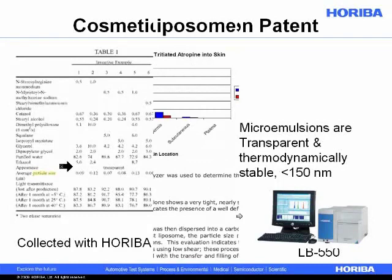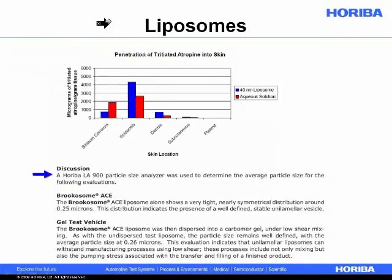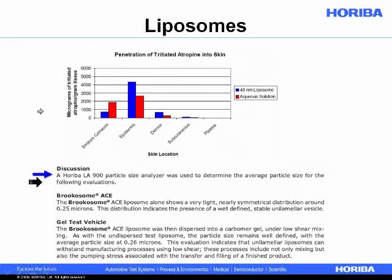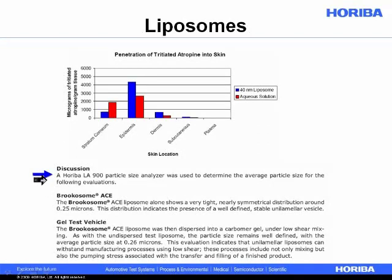I saw quite a few places where people posted right on their spec sheet that they're using Horiba instruments. This is one example where they're using a Horiba LE900 — and this was for a liposome. What we're showing here is the different ways where the preparation can actually be applied and penetrate the skin, and that is based on the particle size of the liposome as measured on an LE900.